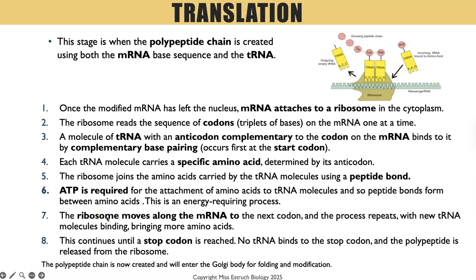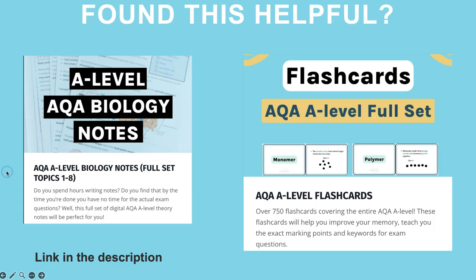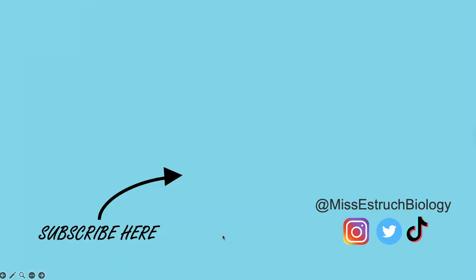The key marking points are the bold items — the rest is just to make the sentence coherent. That is how we create our polypeptide chain, which is now ready to enter the Golgi apparatus where it will be folded and modified to finish it ready for use. That's the end of protein synthesis. If you want mark-scheme-specific notes with examiner tips, recall questions, essay links, and more, those are linked in the description, along with flashcards covering all key marking points. Hopefully you found this helpful — see you in the next video!